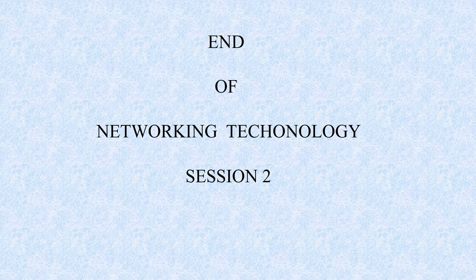Let us summarize what we have seen in today's session. We covered what is meant by transmission media, the different types of transmission media, and the characteristics of transmission media: bandwidth, band usage, attenuation, electromagnetic interference, cost of the media, and installation. This is very important from the board exam point of view. This brings us to the end of Networking Technology session two. Please subscribe to the channel and press the bell icon so that you will get notifications for the next video.